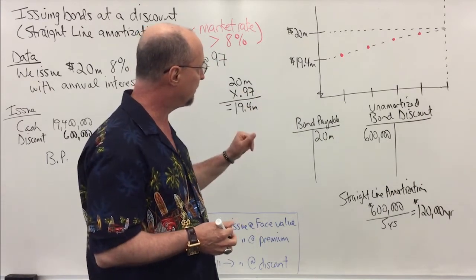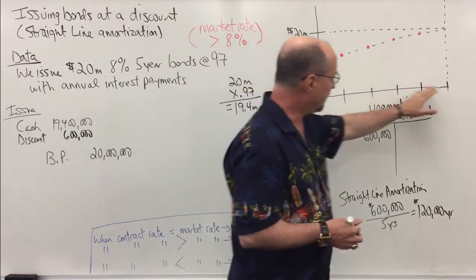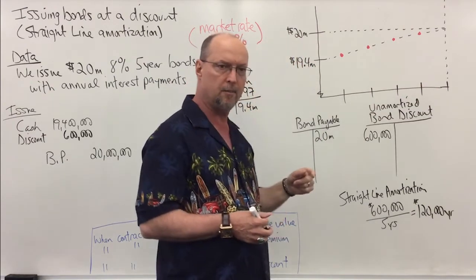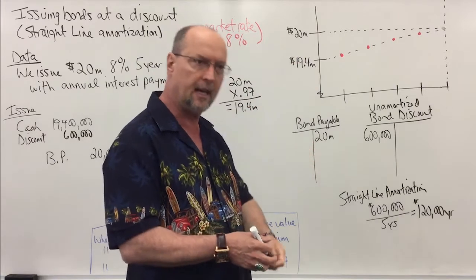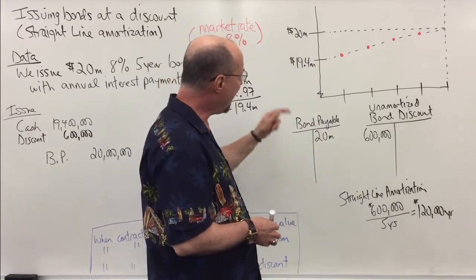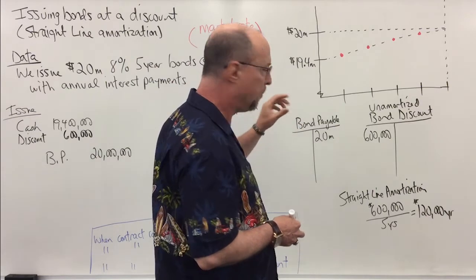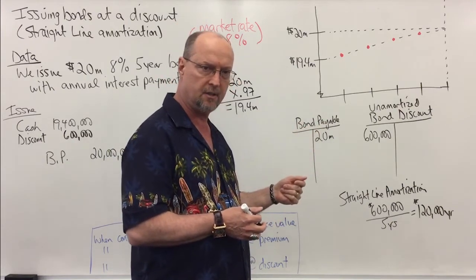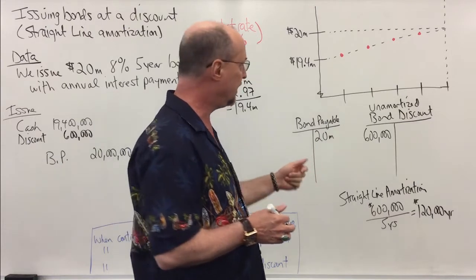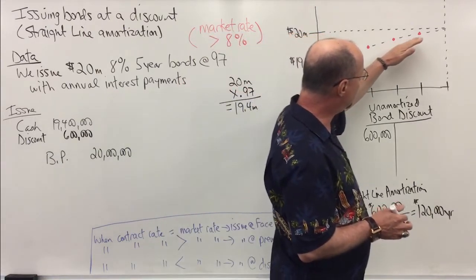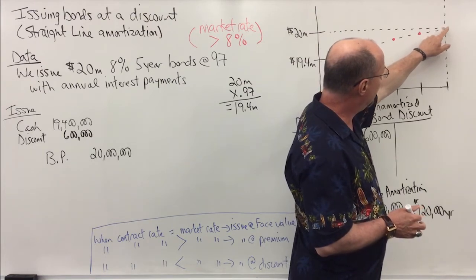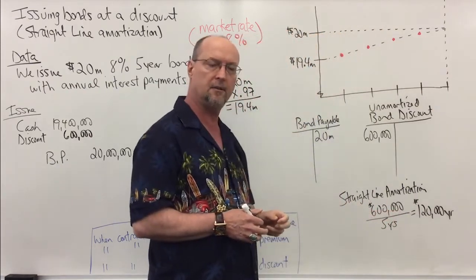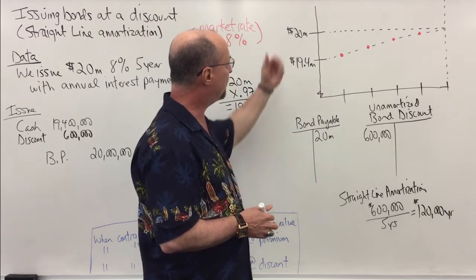Now look at the chart up here, okay? Over five years on the date of issuance, we only generated $19.4 million, and again it's because the market rate was higher than the contract rate which is what we're paying. As we amortize the bond, the book value, which is bonds payable minus the unamortized discount, and this is the amount we have to report on the balance sheet, is going to increase until the bond discount is fully amortized. And on the maturation date or date of maturity, we're going to pay back the bondholders $20 million.